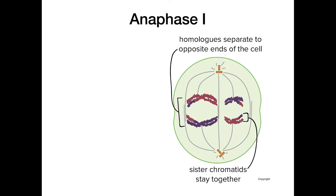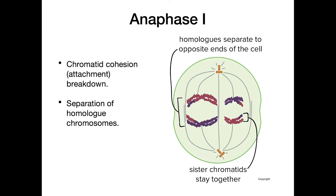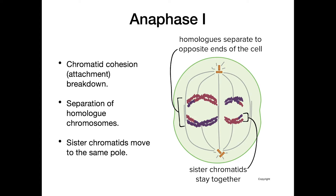In anaphase 1, we have chromatid cohesion breakdown — the cohesion proteins break down between the homologous chromosomes so they can be pulled apart. We separate our homologous chromosomes: one homologous pair moves to one end of the cell and the other moves to the opposite end. Sister chromatids move to the same pole because they're still attached to one another. So in anaphase 1, it's the homologous chromosomes that separate, not the sister chromatids.